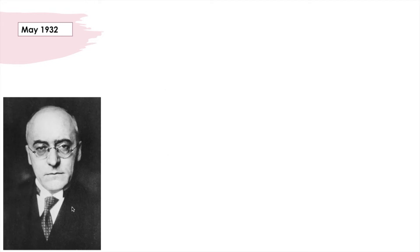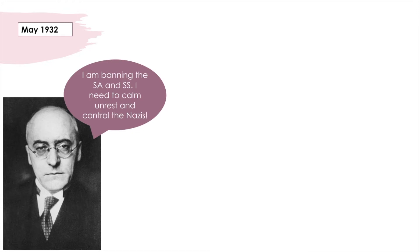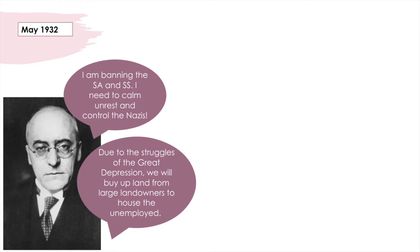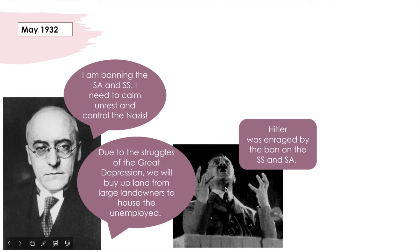Hindenburg's re-election did not bring the stability that they had hoped for yet again. In April 1932, the moderate Chancellor Heinrich Brüning took two steps which lost him all hope of majority support in the Reichstag. First of all, he banned the SA and the SS because there was a genuine fear that a civil war would break out on the streets of Germany — he wanted to calm unrest and control the Nazis. Secondly, as a result of the Great Depression, he announced a plan to buy up land from large landowners to help house the unemployed. These two moves united the right-wing groups against Brüning. The ban on the SA and SS enraged Hitler, and the landowning classes were also furious about the plan to buy up their land.